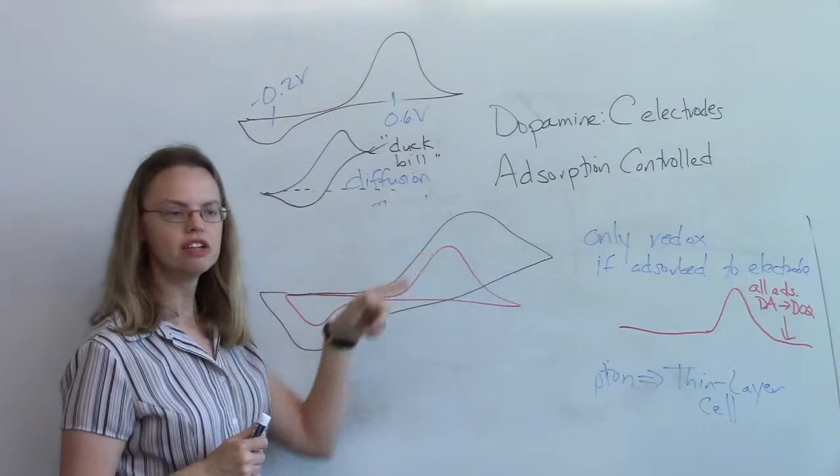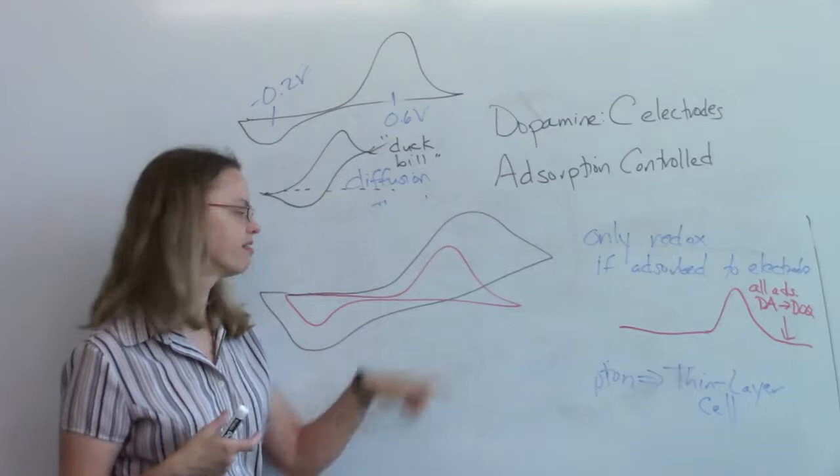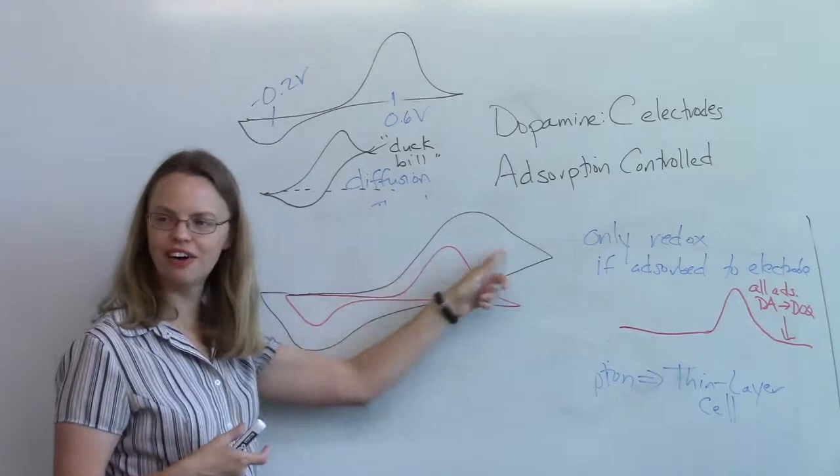So if you go to a high enough concentration, you can get to where diffusion's going to more control it. So just being a connoisseur of the shape tells you something about the kinetics. I've got these really symmetrical peaks, must be adsorption. It's hanging up a little bit.